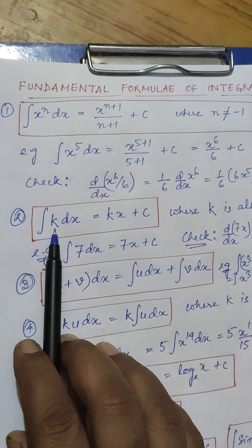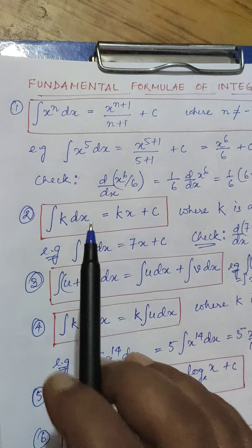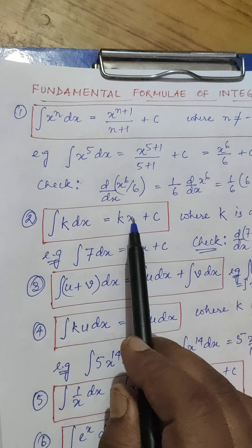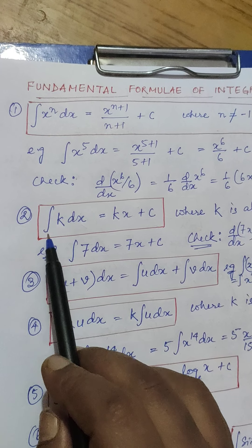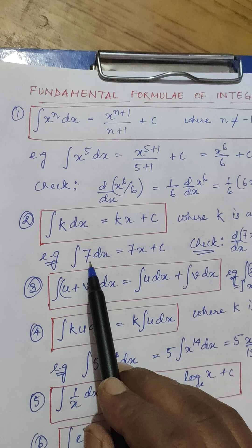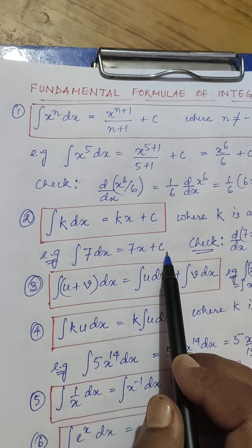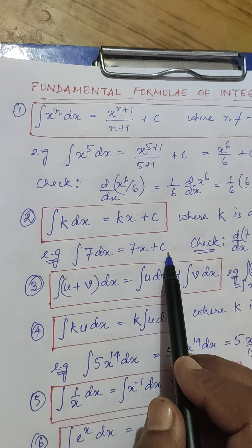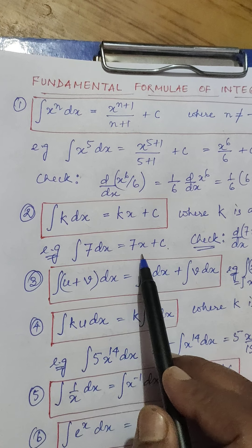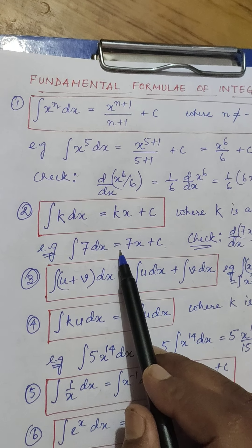The next point is integration of a constant. If K is a constant, the integration of a constant dx is the constant multiplied by the variable x, plus c, because it is indefinite. For example, integration of 7 dx equals 7x + c, since 7 is a constant. We can verify this: differentiating 7x gives 7, confirming the answer is correct.